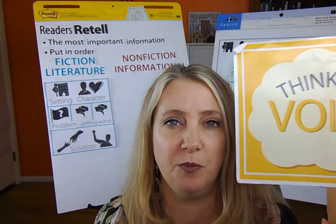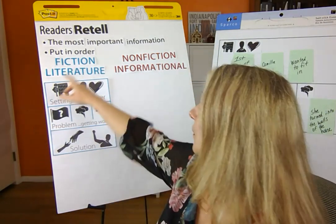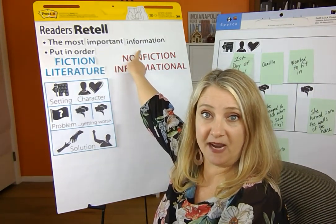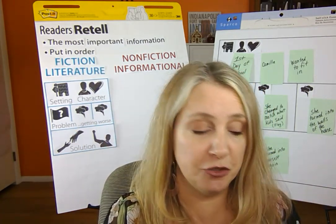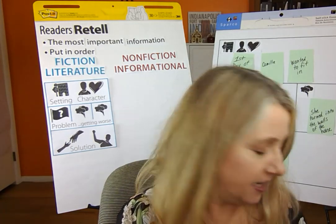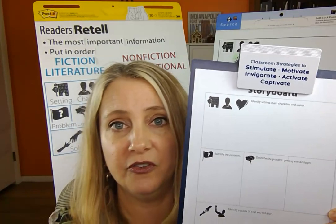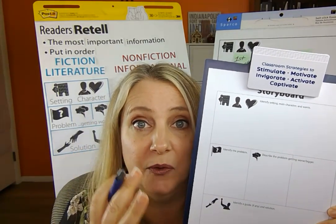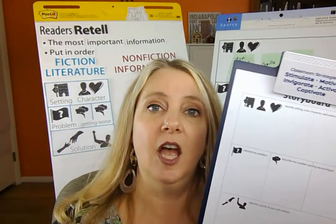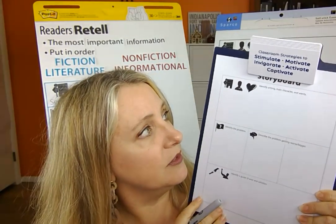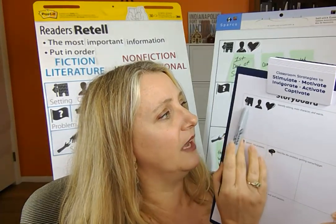That's the reading voice — visualizing, having thoughts: 'Oh, that'd be fun!' 'Why isn't dad getting his swim trunks on?' — all those thinking-voice thoughts you probably had while reading. Now continue with the thinking voice after reading. We're going to pick the most important information, which will be the story elements, put them in order, and this time we're not just going to do it orally — we're going to do it in writing. I have my clipboard and the storyboard, and I'm going to write down what we come up with together.